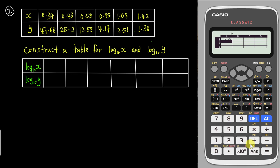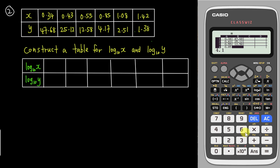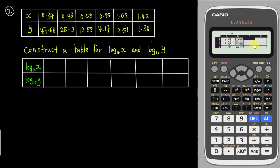Enter the x values: 0.34, 0.43, 0.55, 0.85, 1.08, and 1.42. Then move to the first cell of column B and enter the y values: 47.68, 25.12, 12.58, 4.17, 2.51, and 1.38. After typing, check through all the x and y values to make sure there are no mistakes.